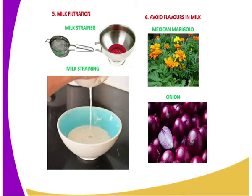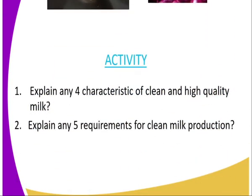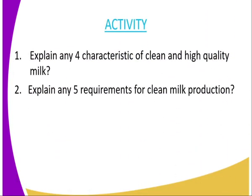Then we have milk filtration. You are supposed to make sure that you filter and strain the milk so that you can get rid of hair and dust particles. We also have avoid flavors in milk — you are not supposed to feed animals meant to be milked with foods such as onion or Mexican marigold, because these normally taint the milk and interfere with the flavor of the milk.